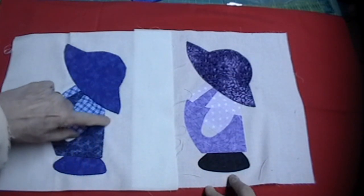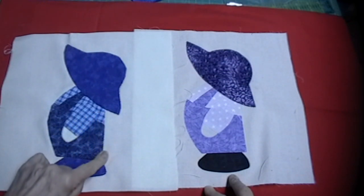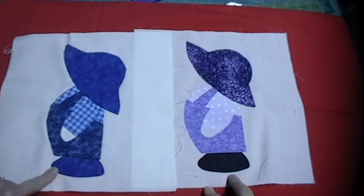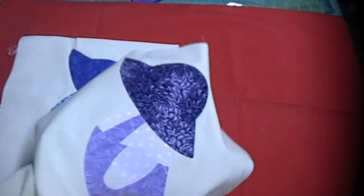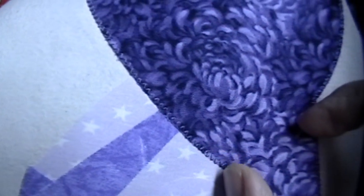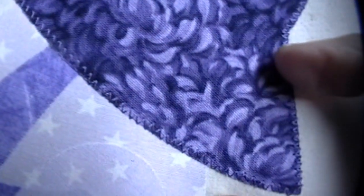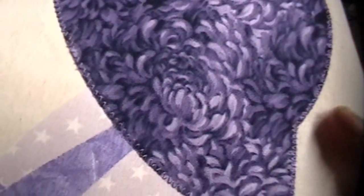This one is made by turning the edges under and then sewing it to the block, so you have turned edges. This one, the edges are not turned but are finished with small zigzag stitches. Can you see the small zigzag stitches which finish the edge? You can also use a blanket stitch.